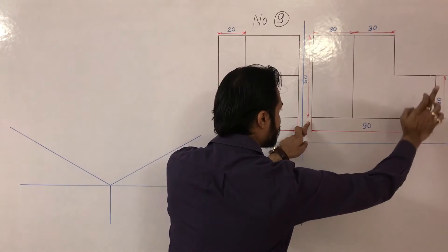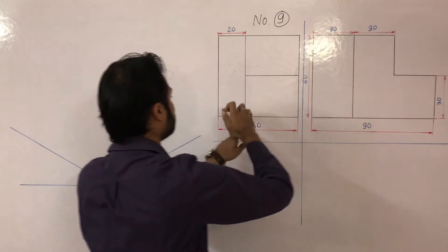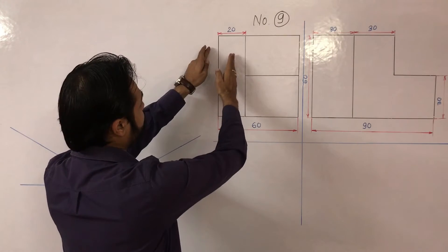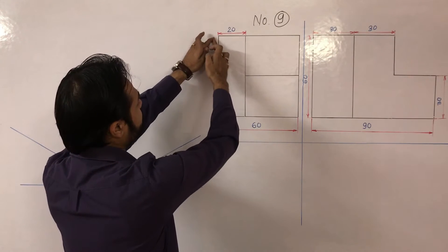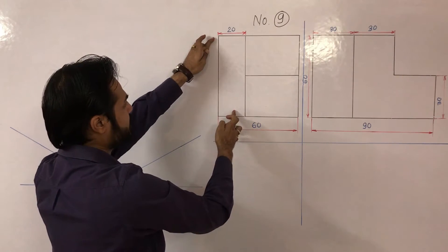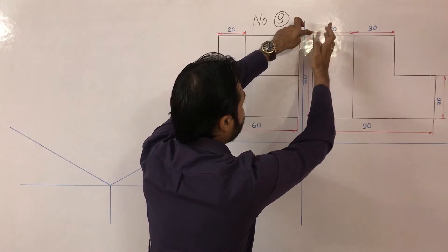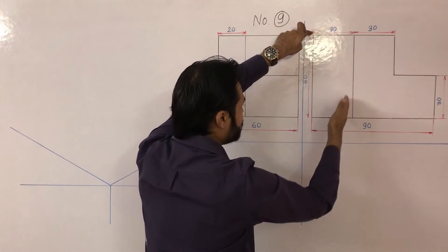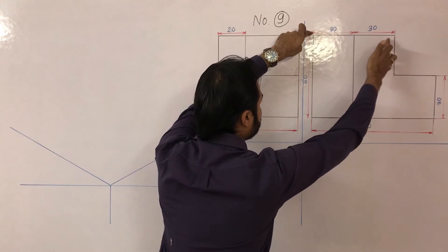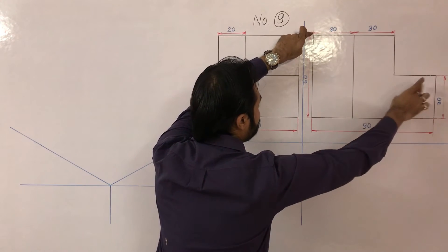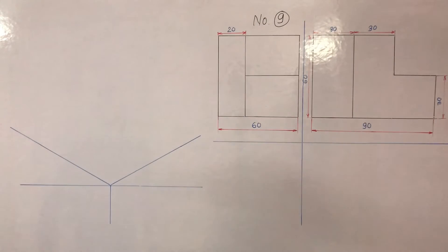First, let's check the different dimensions. The full length of this block is 90, height is 60, and width is also 60. In the side view, after 20 we have a discontinuity. In the front view, from this edge after 30 we have the first discontinuity, after another 30 the second discontinuity, and this height is also 30.